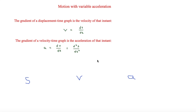This is Mr. Stark, and in this video we are looking at motion with variable acceleration. Last video we looked at when acceleration is constant, but this time it's different because the acceleration can change. We know that the gradient of a displacement-time graph is the velocity at that instant, so the velocity is equal to ds/dt — differentiating the displacement. The gradient of a velocity-time graph is the acceleration, which means acceleration equals dv/dt, which is the differentiation of velocity, or d²s/dt².